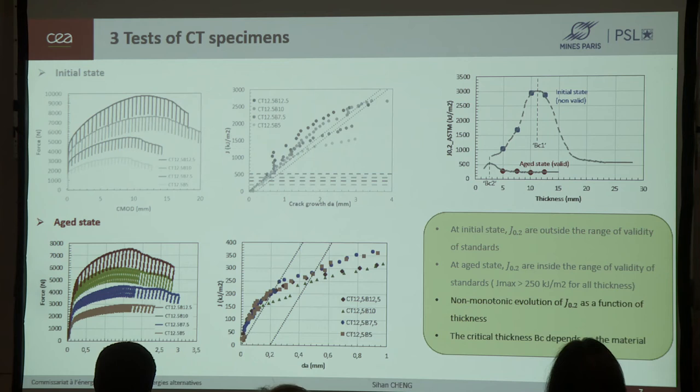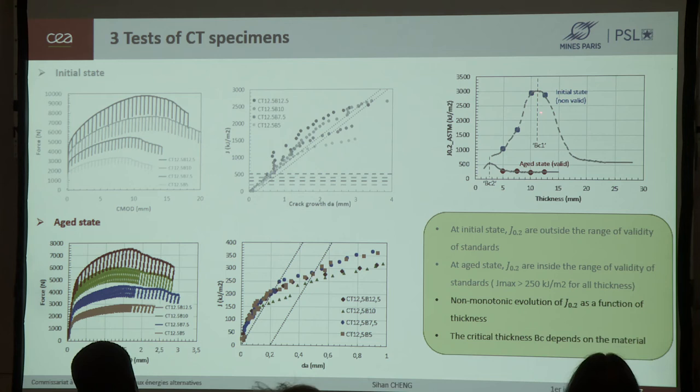Then I did the same experiments with the aged material like the figure below on the left. This time, the CMOD at the maximum force don't have much difference. If we look at the JR curves, we are in the valid domain of standards. That is to say all aged stage tests meet the requirements of standards. The value of J02 are also plotted in this figure with red points. We could see that after aging, the fracture toughness was greatly reduced. And for the non-monotonic evolution, the critical thickness depends on material. The more ductile, the greater the critical thickness.